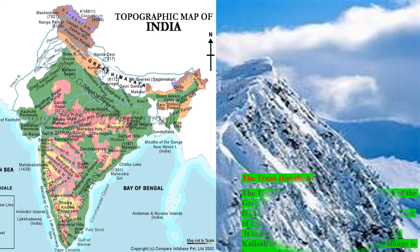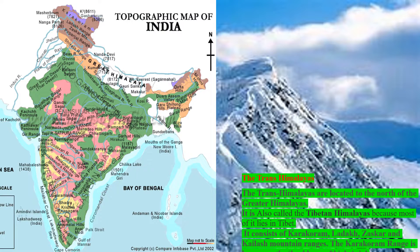The Trans Himalayas extend from the Pamir knot in the west to the Kailash range in the east. Located north of the Greater Himalayas, it is also called the Tibetan Himalayas because most of it lies in Tibet. It consists of four major mountain ranges: Karakoram, Ladakh, Zaskar, and Kailash.